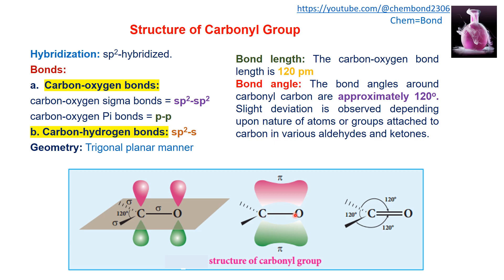The second category is the carbon-oxygen pi bond, which is formed by the parallel overlapping of the unhybridized p orbitals. Both unhybridized p orbitals overlap to produce a pi bond — specifically, the unhybridized p orbital of the carbon atom overlaps in parallel with the unhybridized p orbital of the oxygen atom.